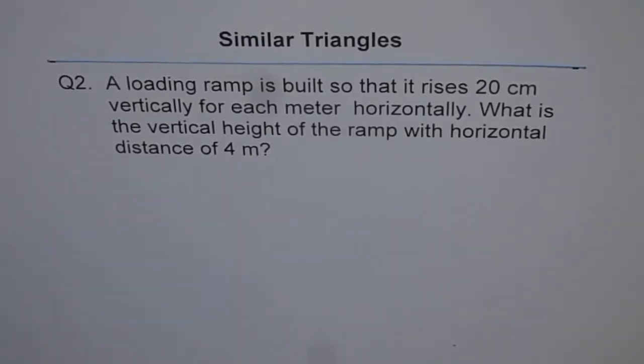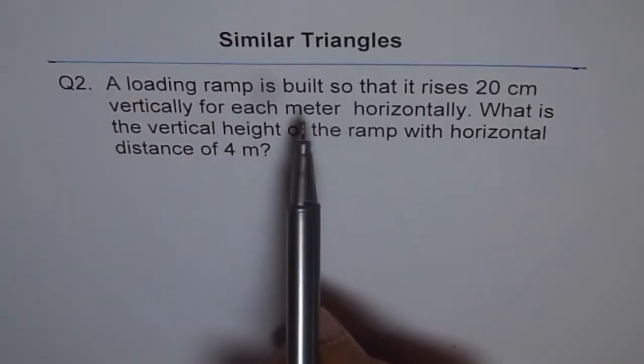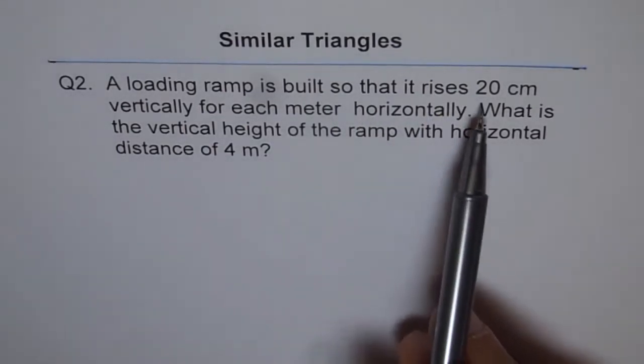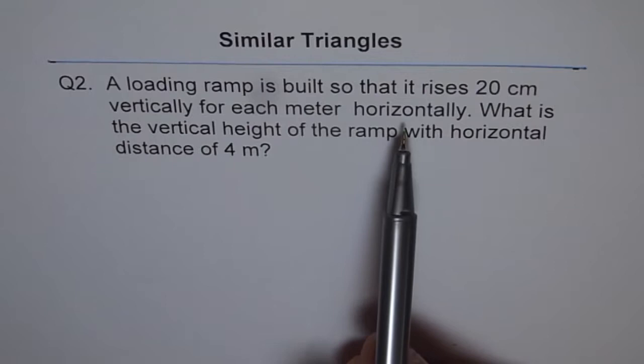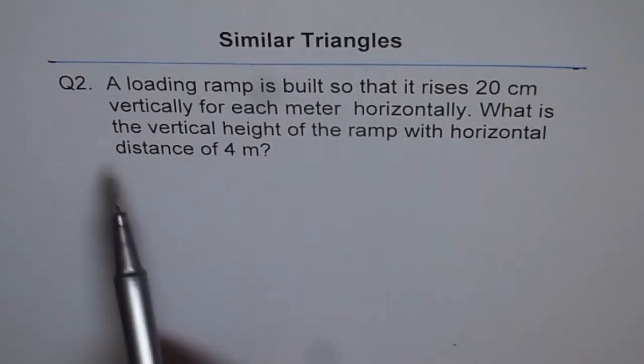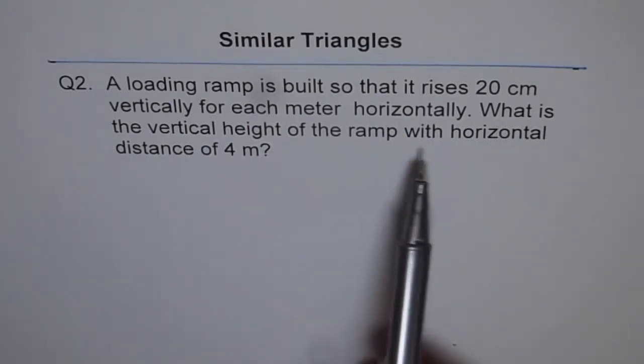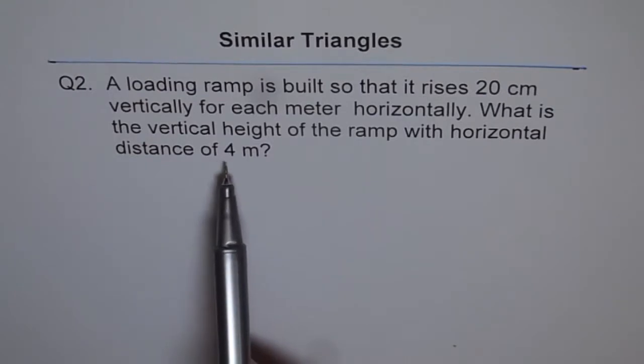Similar triangles, question 2. A loading ramp is built so that it rises 20 cm vertically for each meter horizontally. What is the vertical height of the ramp with horizontal distance of 4 meters?